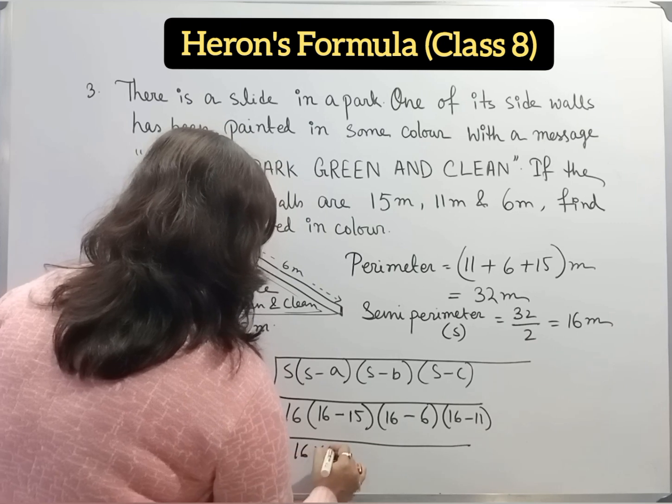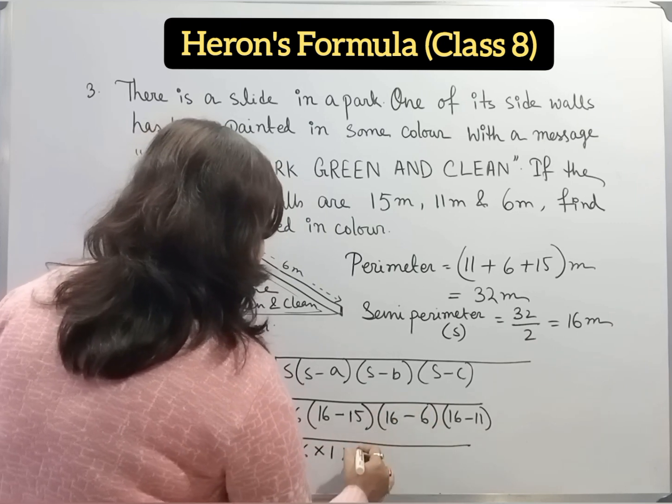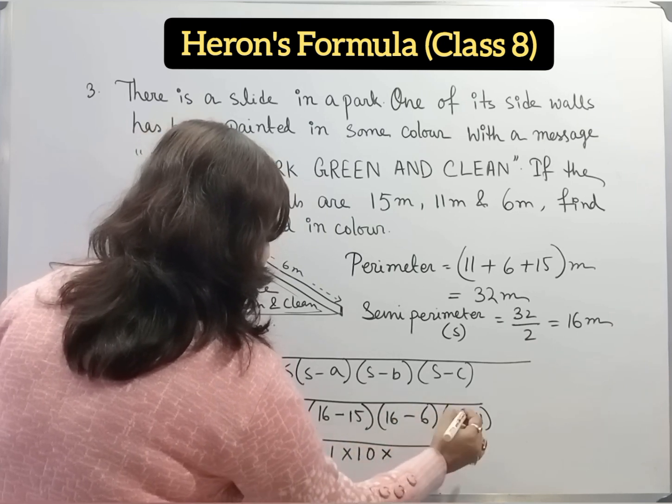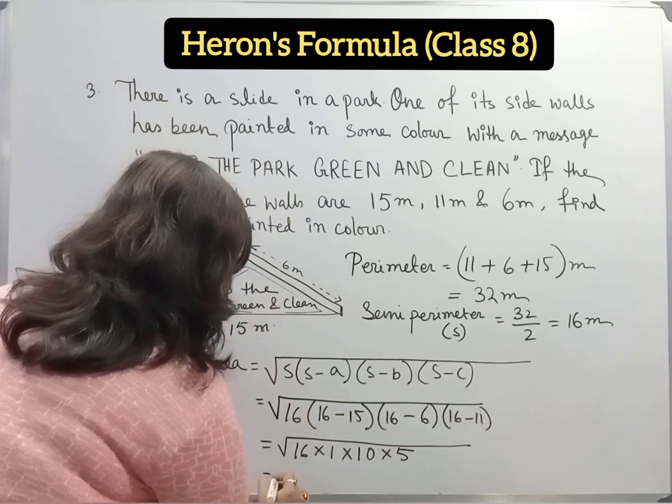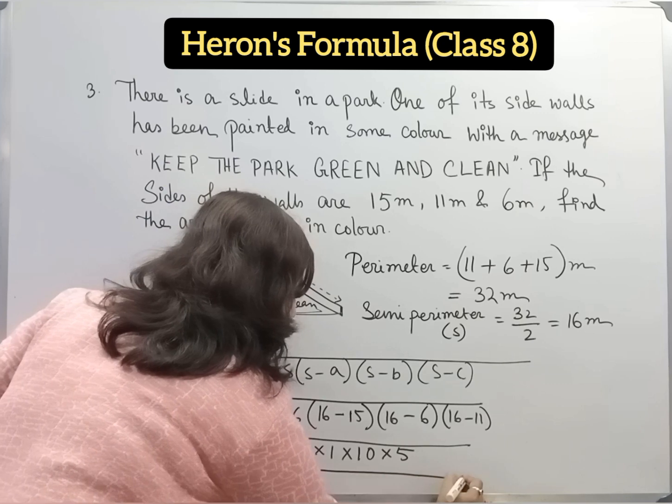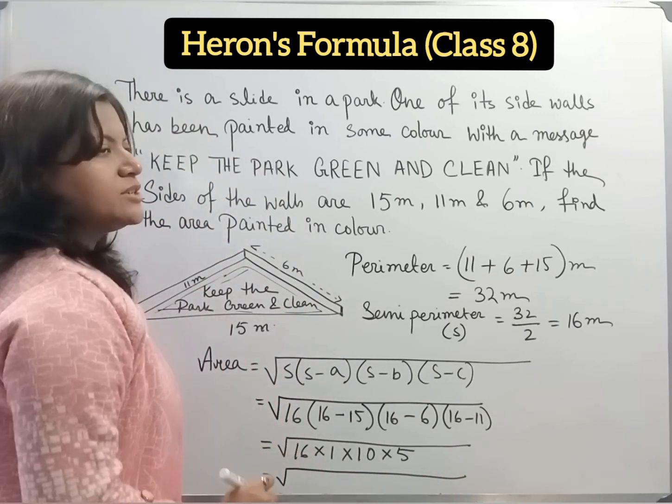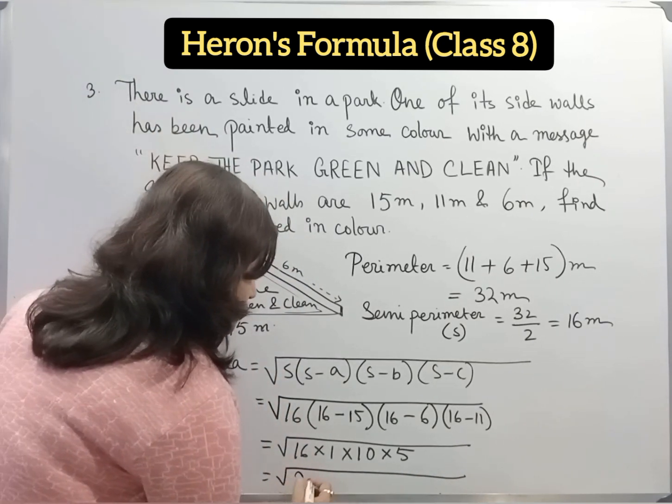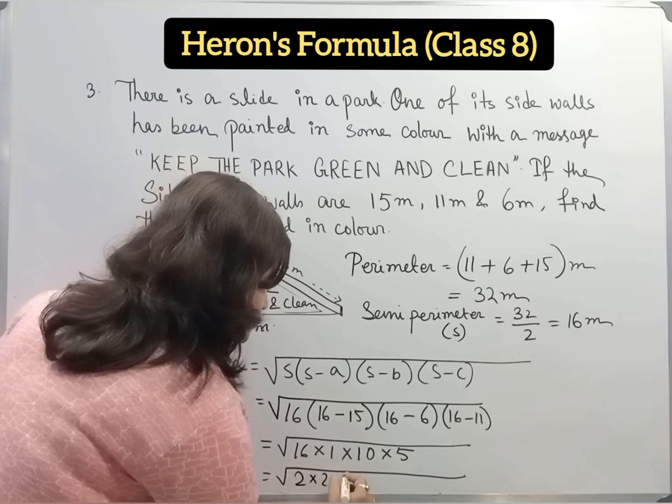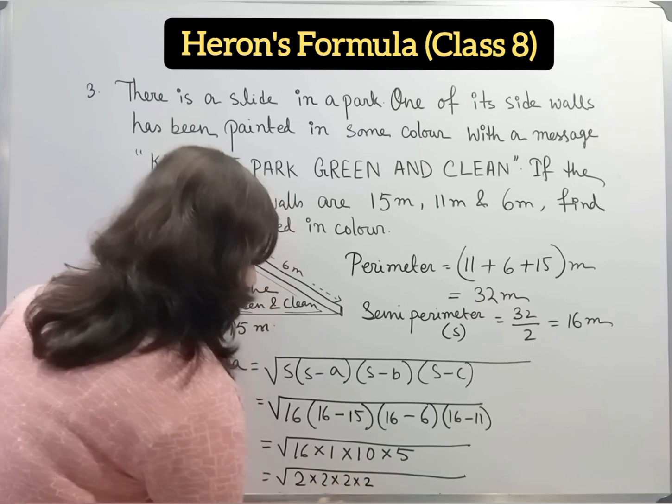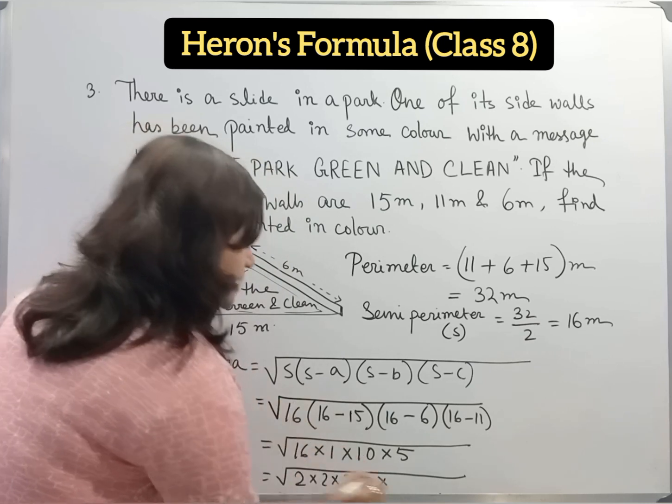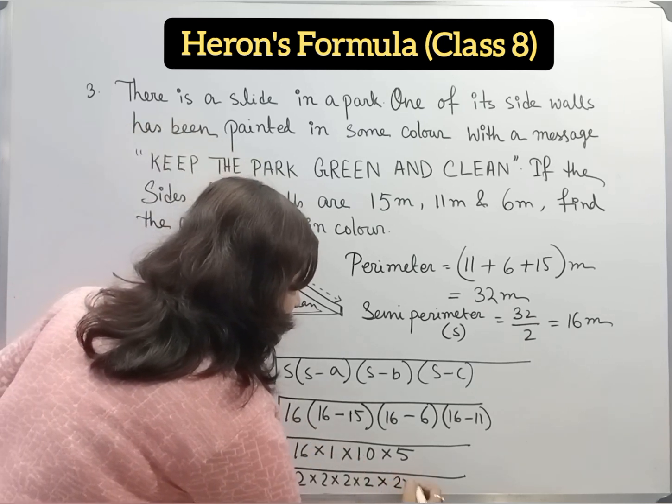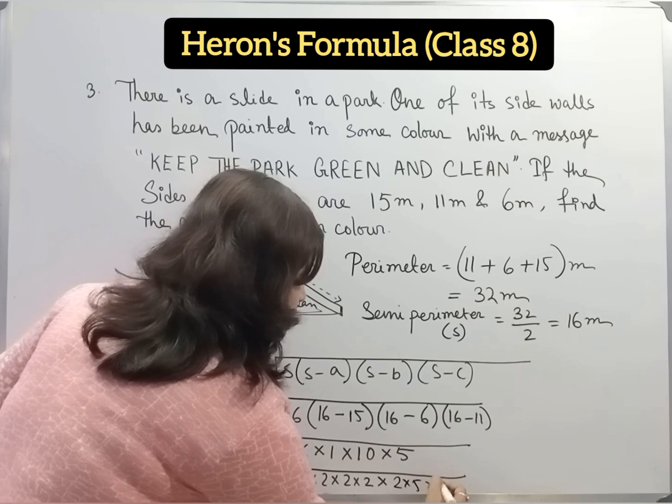So 16 into 1 into 10 into 5. Now in the place of 16 we can write 2 into 2 into 2 into 2. Then 10 we can write 2 into 5. Then 5.